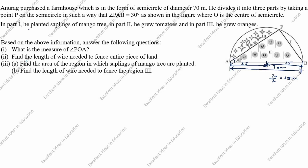In part 1, he planted samplings of mango trees. In part 2, he grew tomatoes. In part 3, he grew oranges. Based on the above information, answer the following questions.